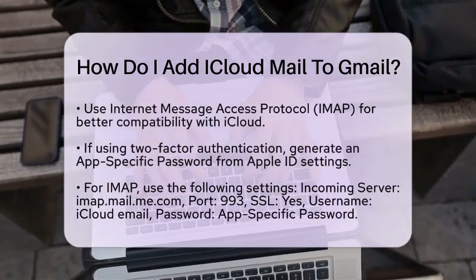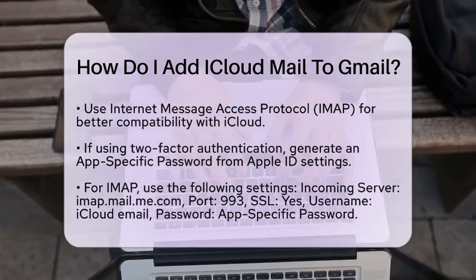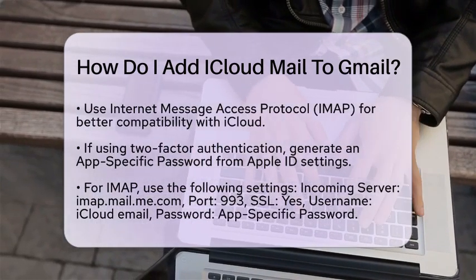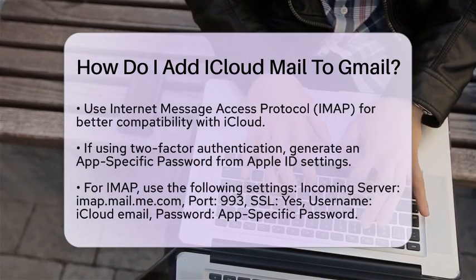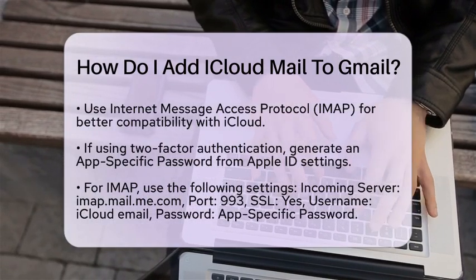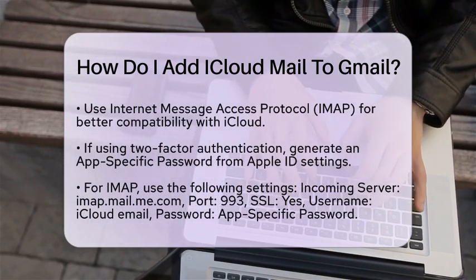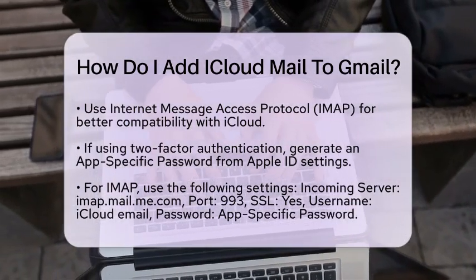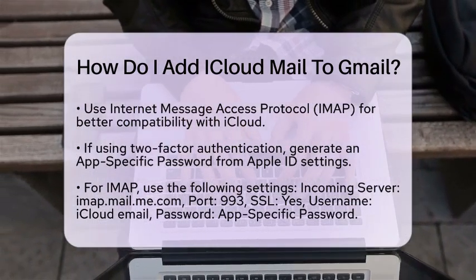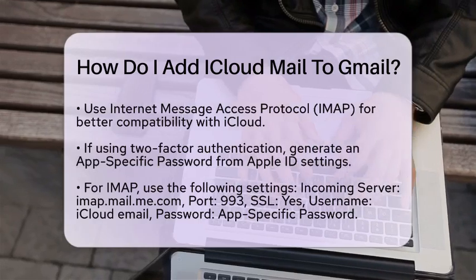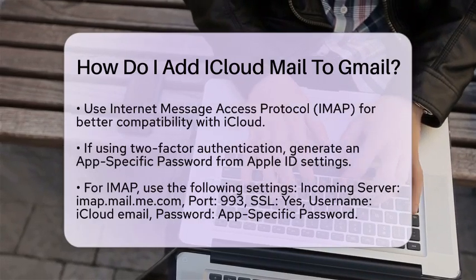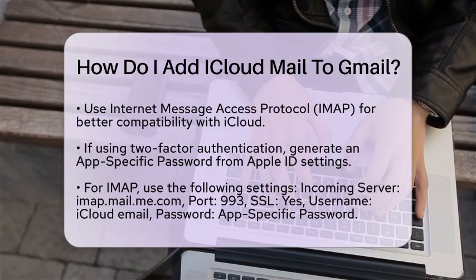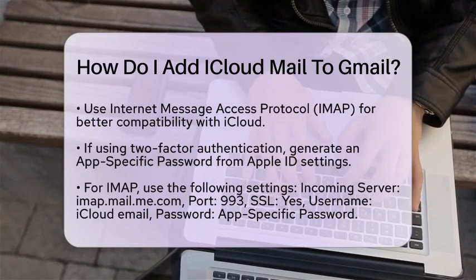For the IMAP settings, use the following details. Incoming server: imap.mail.me.com. Port: 993. Requiring SSL/TLS: Yes. Username: your iCloud email address. Password: use the app-specific password you generated.